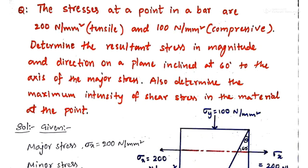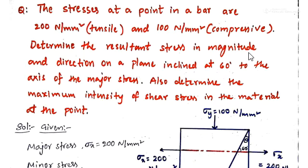Now we are seeing a problem from the topic principal stresses and strains. The stresses at a point in a bar are 200 N/mm² tensile and 100 N/mm² compressive. Determine the resultant stress in magnitude and direction on a plane inclined at 60 degrees to the axis of the major stress. Also determine the maximum intensity of shear stress in the material at the point.